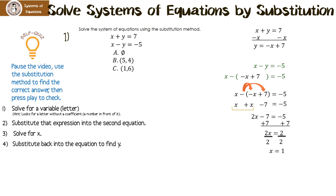Now I need to find y, so I substitute x equals 1 back into the first equation. Putting 1 in for x and subtracting 1 from both sides gives y equals 6. Looking at our possible solutions: it's not no solution, and it's not the wrong ordered pair. Hopefully you got C — the ordered pair (1, 6).